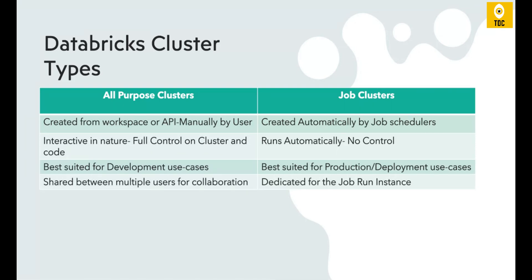At a high level there are two types of clusters: the All-Purpose Cluster (also called General Purpose Cluster) and the Job Cluster. An All-Purpose Cluster is one that you as a user manually create in the Databricks workspace. You specify all the configurations — number of worker nodes (Executors), Driver configuration, and so on. Once created, multiple users can share this cluster; for example, 10 developers or different data analysts on your project can all use it.